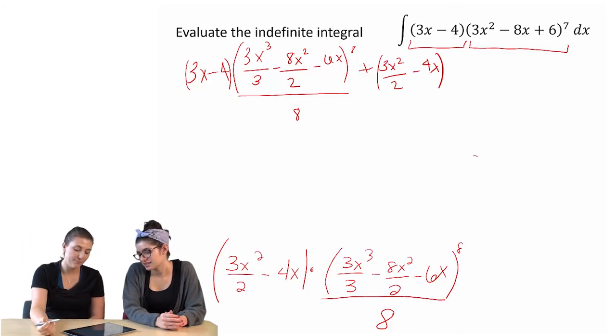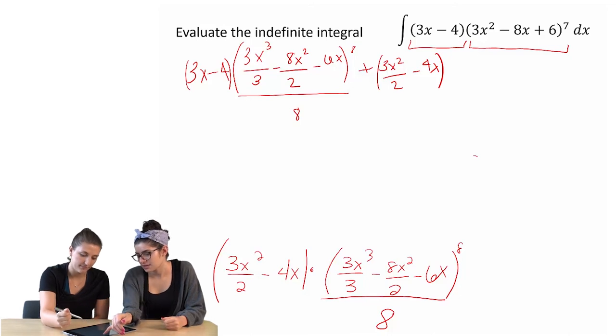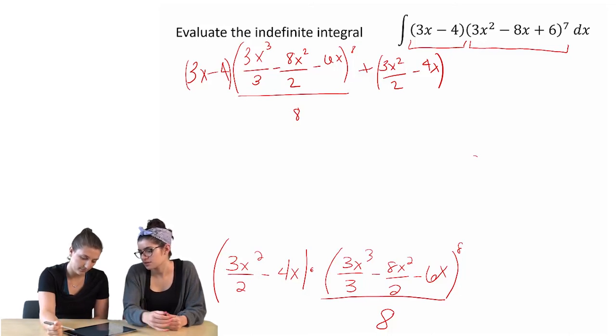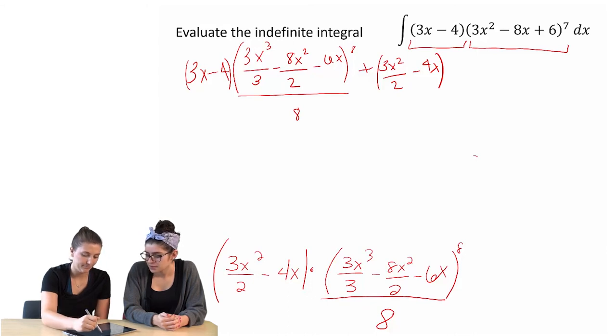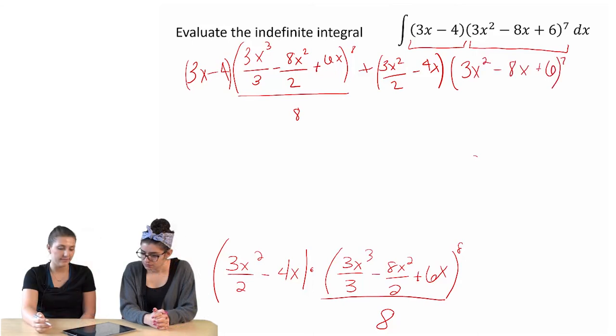Well, we can just bring this one eighth out front. So it really comes down... Isn't it just going to turn back into what we started with? 3x squared minus 8x plus 6 to the seventh hour? Oh. Yeah. Sweet. So times... That's not the same thing.